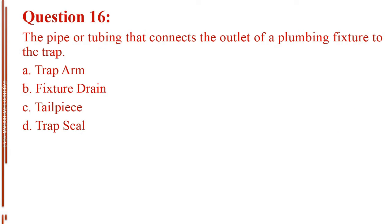Question number 16. The pipe or tubing that connects the outlet of a plumbing fixture to the trap. Letter A, trap arm. Letter B, fixture drain. Letter C, tailpiece. Letter D, trap seal.